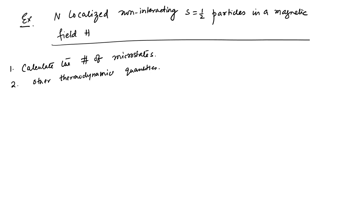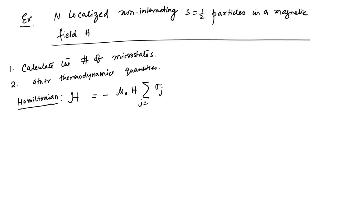We write the Hamiltonian (curly H) as H = −μ₀H Σⱼ σⱼ, where j runs from 1 to N. There are N spin-1/2 particles and μ₀ is the Bohr magneton or magnetic moment. The σⱼ can take values +1 (spin up) or −1 (spin down), corresponding to two distinct orientations. Note that curly H is the Hamiltonian, while H in normal font is the applied magnetic field.